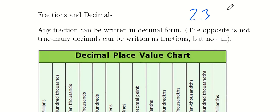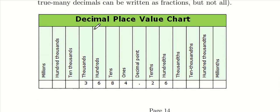Any fraction can be written in decimal form, but the opposite is not true for many decimal numbers, and we'll highlight that in the next section. For the ones that can be, let's take a look at the place value chart. We already talked about the whole number positions: ones, tens, hundreds, thousands, and so on going to the left.